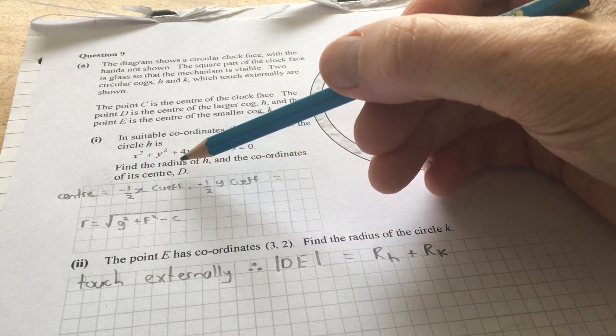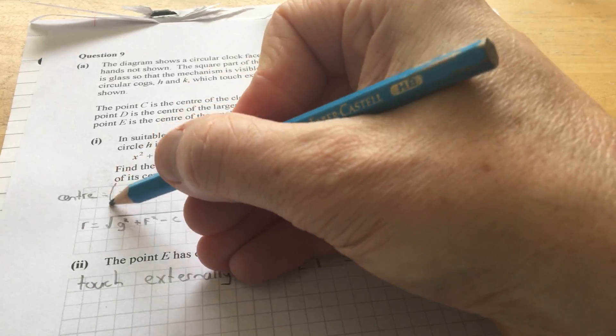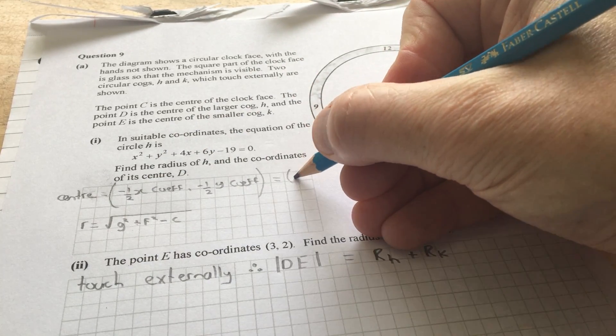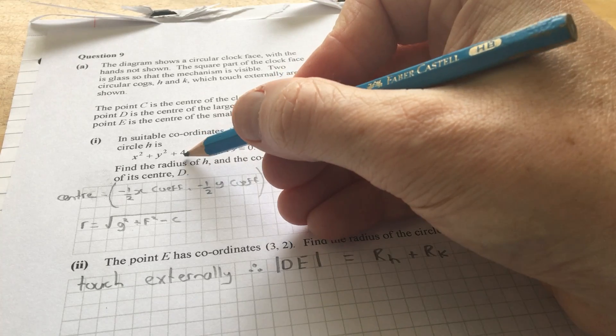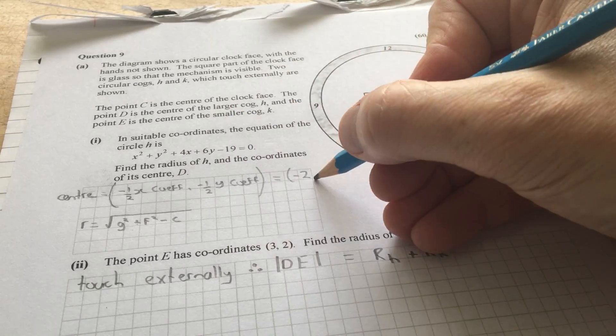Now, the center of the circle, when the circle is given to you in this form, the center is minus a half the x coefficient and minus a half the y coefficient. So that will be divide this by 2 and change the sign, and divide this by 2 and change the sign.